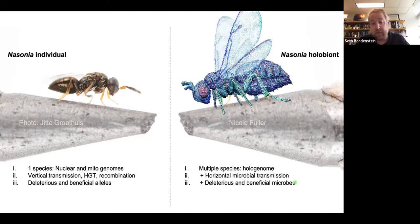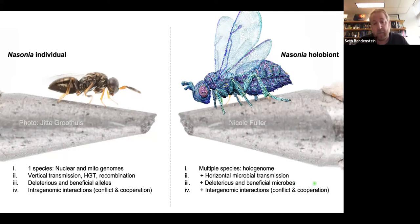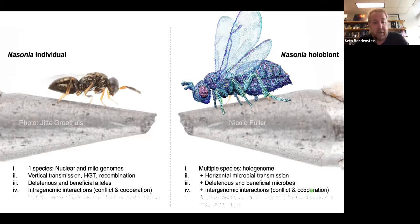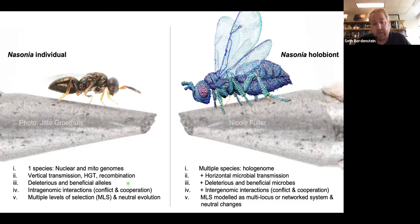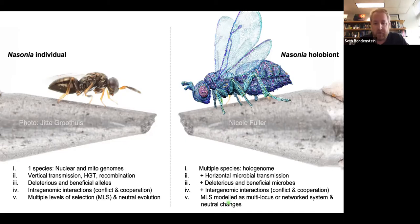There are deleterious and beneficial alleles at the individual level, and deleterious and beneficial microbes on the holobiont side. On the individual side there are intergenomic interactions — genes competing or collaborating. On the hologenome side, hosts and microbes can compete or collaborate. Multiple levels of selection can operate on genes, chromosomes, and whole genomes, and similarly, multilevel selection can be theoretically modeled as a multi-locus or network system in the hologenome. I think these terms offer a more integrative view of the host microbiome system.